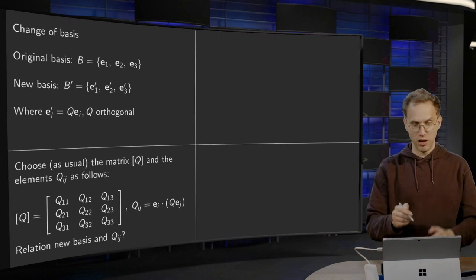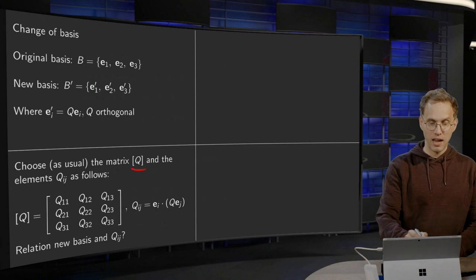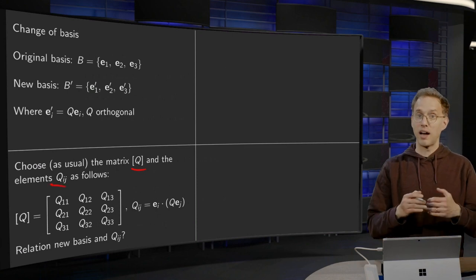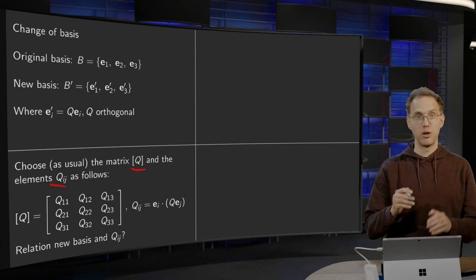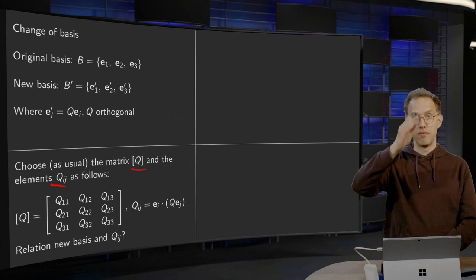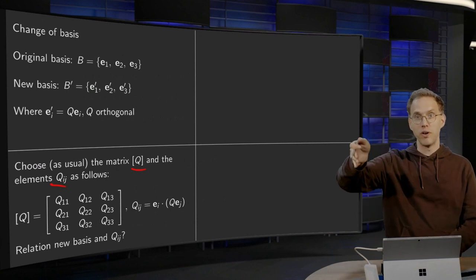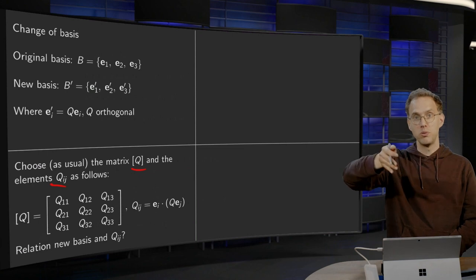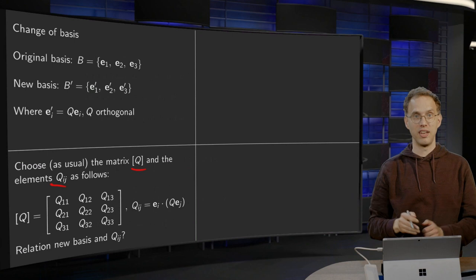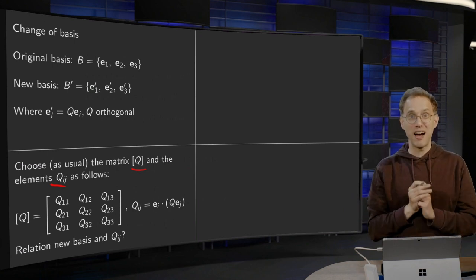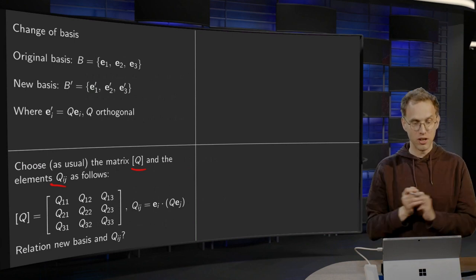Well, we choose as usual our matrix Q and the elements QIJ as usual. So the QIJ, when you put them in the matrix, you have Q11, Q12, Q13, Q21, Q22, Q23, Q31, Q32, Q33. That's how you define components of Q, just in the normal way.